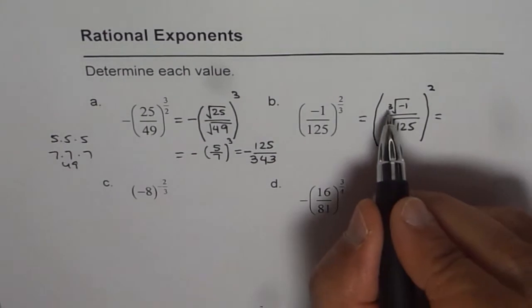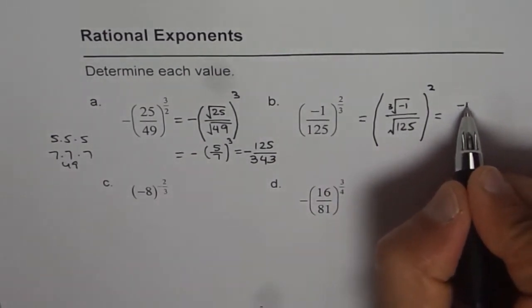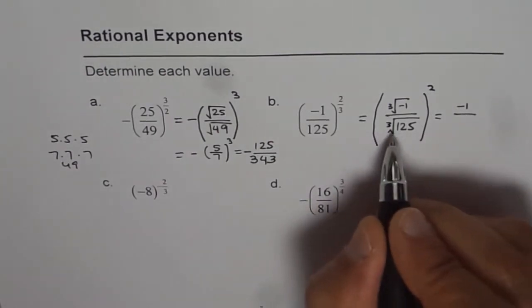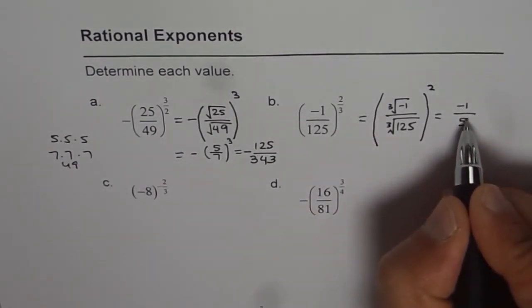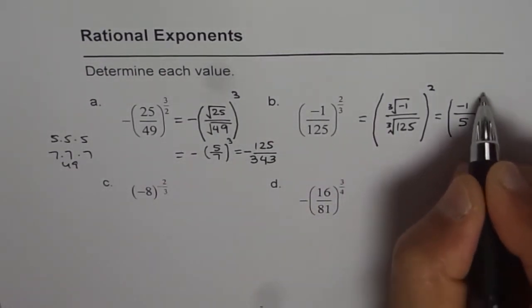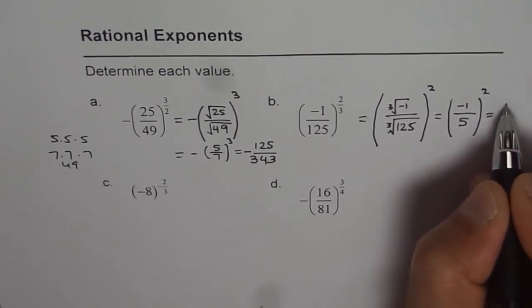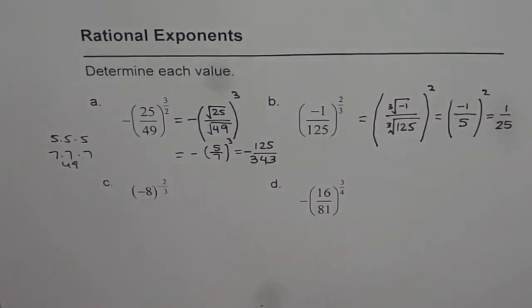So what do we get? Cube root of negative 1 is negative 1. Cube root of 125 is 5, and square is the answer. That is 1 over 25. So it will make the number positive. So we get a positive result, 1 over 25.